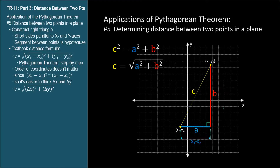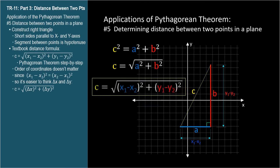Similarly, distance b is the vertical distance between the y-coordinates: y1 minus y2. So when we substitute these expressions into the equation, we get the general equation for the distance between two points in a plane.